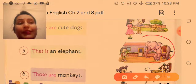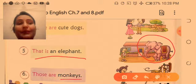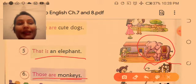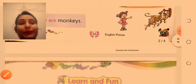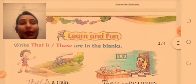Elephant, single elephant, that is an elephant. Monkeys, more than one, those are monkeys. See, learn and fun. Write that is or those are in the blanks. That is or those are.